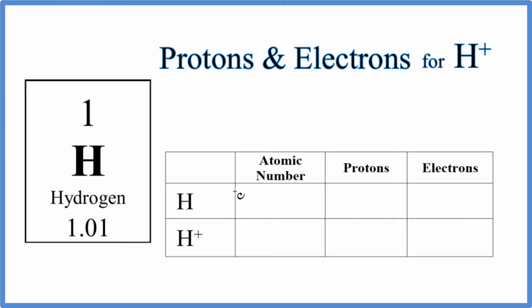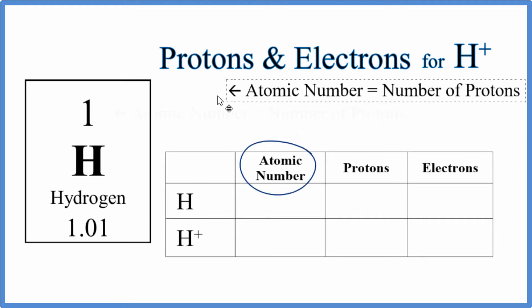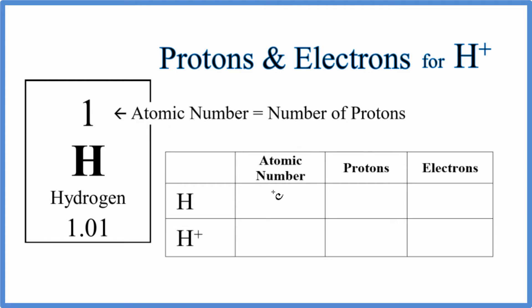So for hydrogen, for H here, the atomic number, that's this right here. We have an atomic number of 1. And actually, the atomic number for hydrogen or the hydrogen ion is always 1. So we can just put the 1 there.